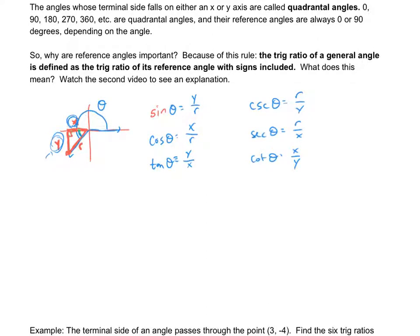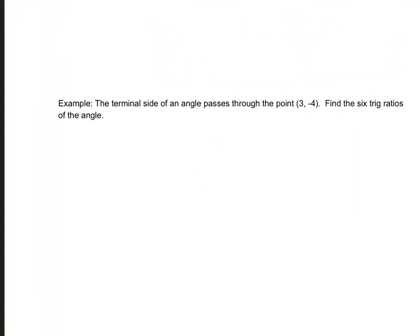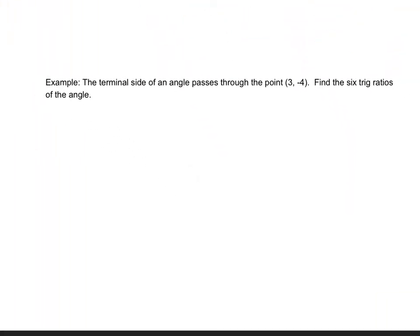Okay. Pause the video, write those down, and then we're going to do the problem at the bottom of the page. Okay. So let's look at the problem at the bottom of the page. Terminal side of an angle passes through the point (3, -4). Find the six trig ratios of the angle.